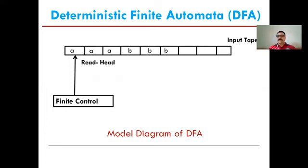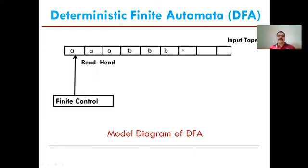Now let us start the first machine — the Deterministic Finite Automata, that is DFA. This is the basic machine of this subject, Theory of Automata and Formal Language. The DFA consists of three parts: first is the input tape, second is the head, and third is the finite control. The input tape is divided into equal-size blocks called cells, and at a time one input symbol is stored on a particular cell. The job of the head is to read the symbol from the cell — it can read only one cell at a time.